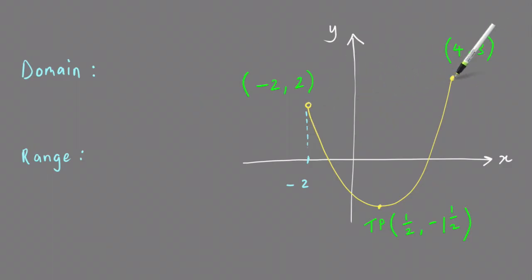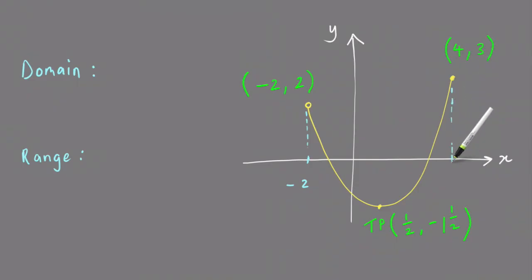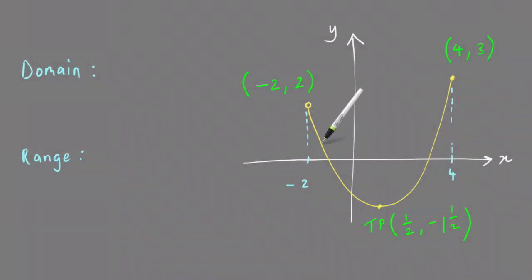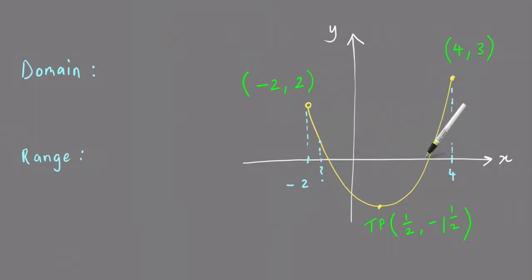If I do the same thing at the other end point, the x value is 4. I drop down to the x-axis and mark in where the value 4 is. Now if I pick any point on the graph and do a similar thing, the x value is somewhere between minus 2 and 4, and it doesn't matter where I pick a point on the curve — the same thing is going to happen.